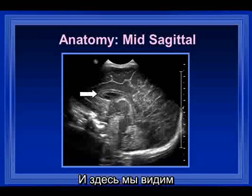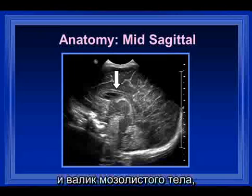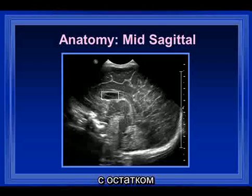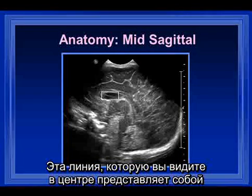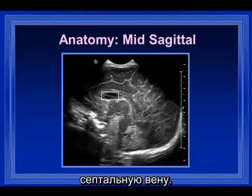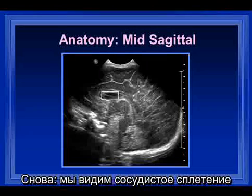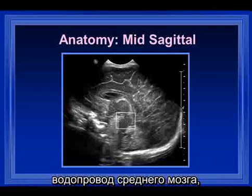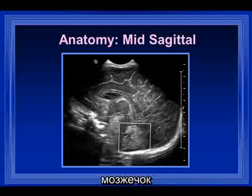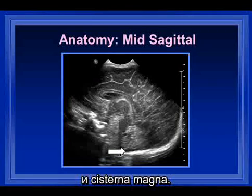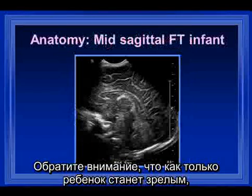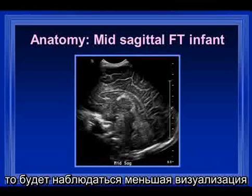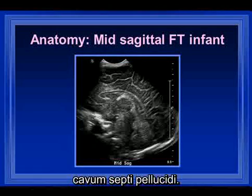This is a baby who's somewhat more mature. You can see that there are more convolutional markings; they're a little bit serpiginous, which happens as they develop. Here we have the genu, the body, and the splenium of the corpus callosum with a remnant of the cavum septum pellucidum. This line seen centrally represents a septal vein. Again, choroid plexus in the roof of the third ventricle, the aqueduct, the fourth ventricle, the brain stem, cerebellum, and cisterna magna.